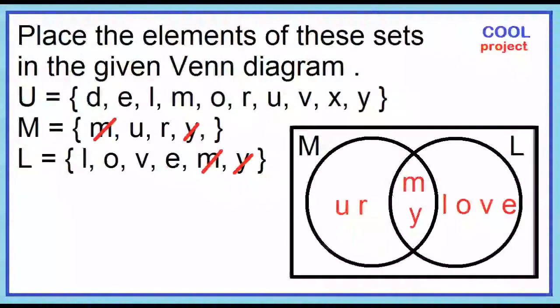Note that there are elements in the universal set U that are not found in sets M and L. Let's check. The elements are X and D. Place X and D outside the circles but inside the rectangle.